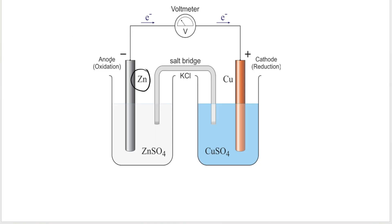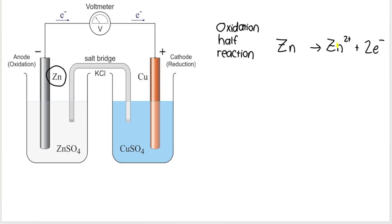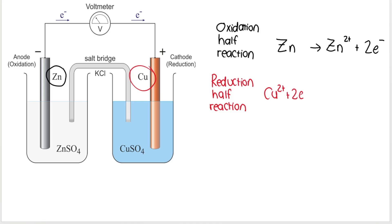In the zinc-copper example from a previous video, zinc was within the anode half cell. Oxidation took place at the anode, and the oxidation half reaction was as follows: zinc is oxidized to form Zn²⁺ ions plus two electrons. At the cathode we have copper, and reduction takes place there. So our reduction half reaction is: Cu²⁺ ions accept the two electrons and form solid copper. Note how I've lined up the arrows in the oxidation and reduction half reactions — it just makes this a bit easier.